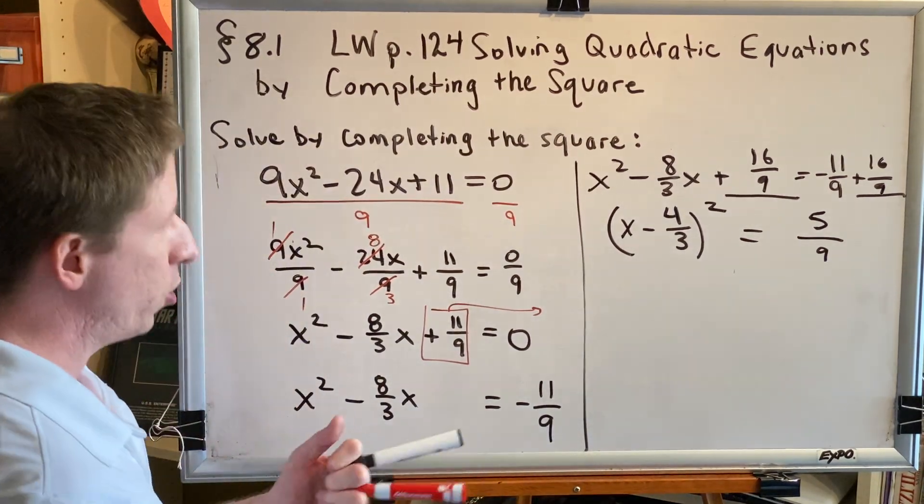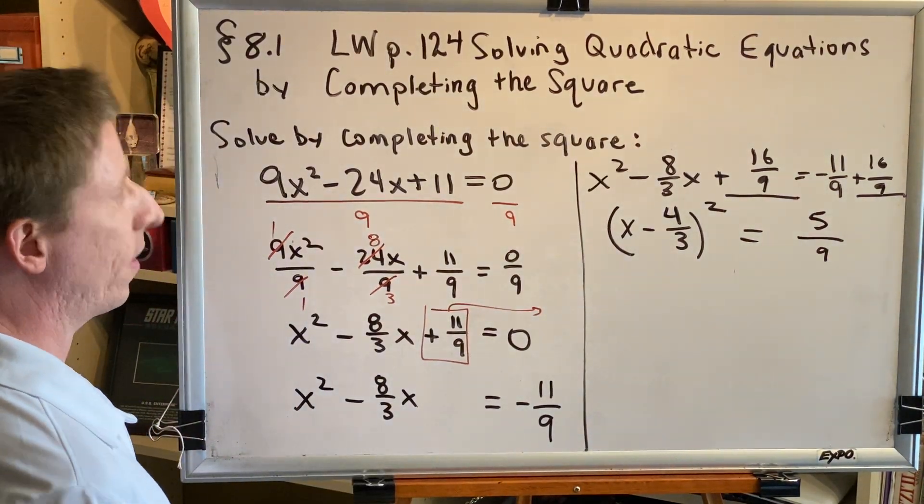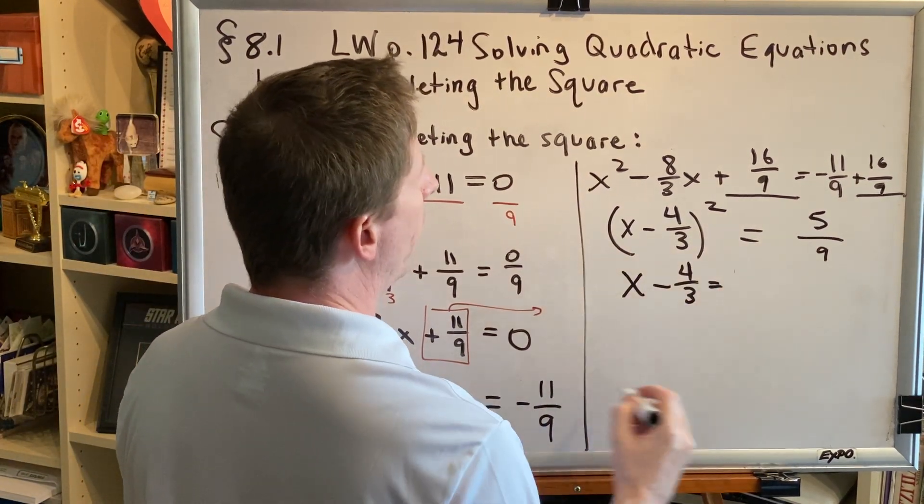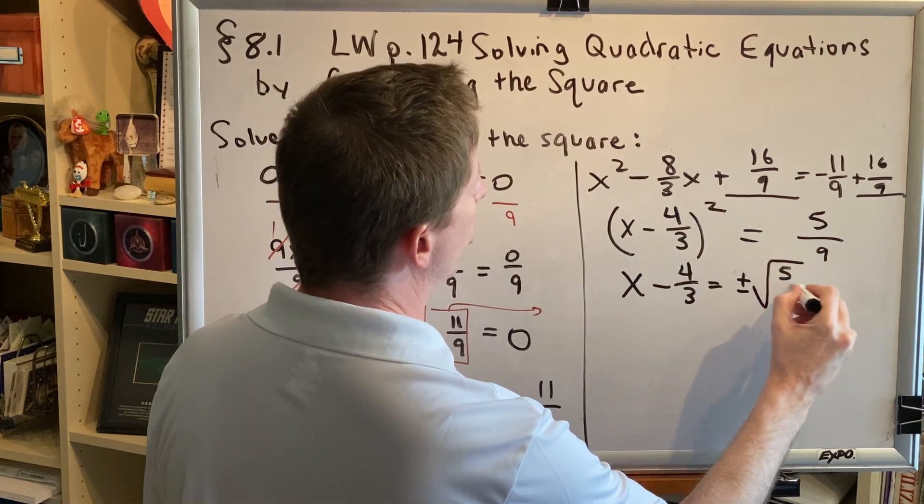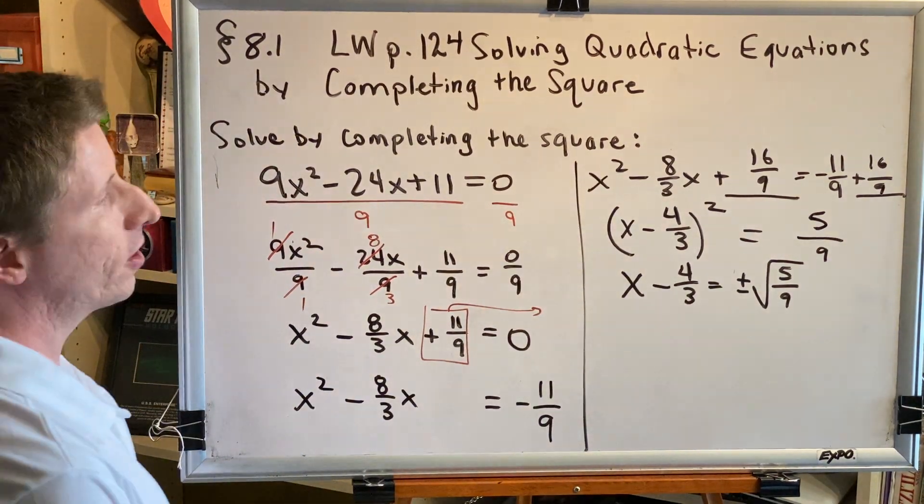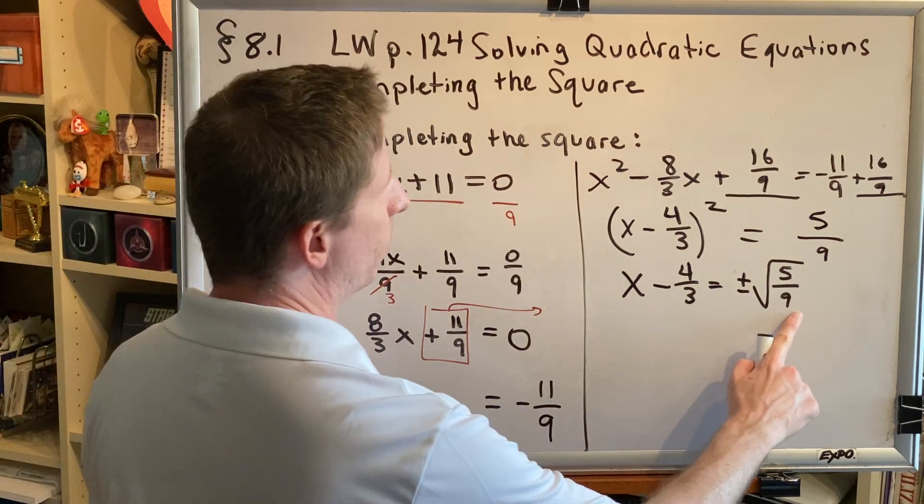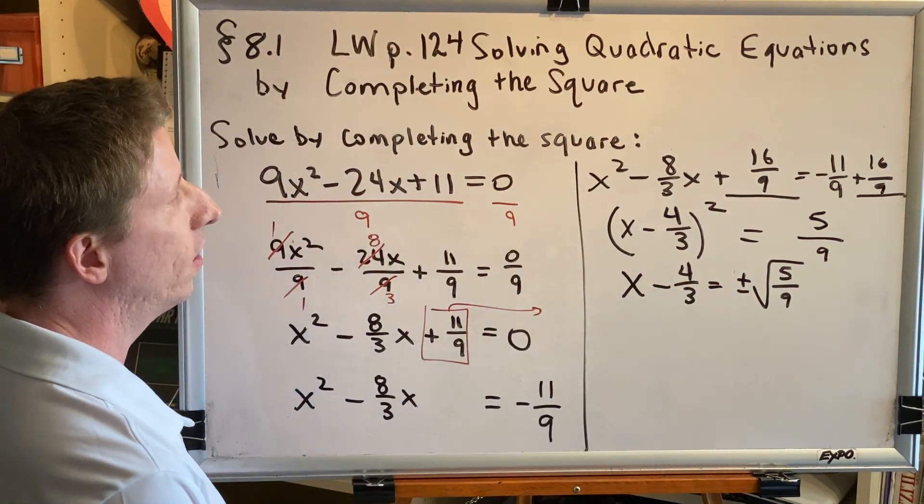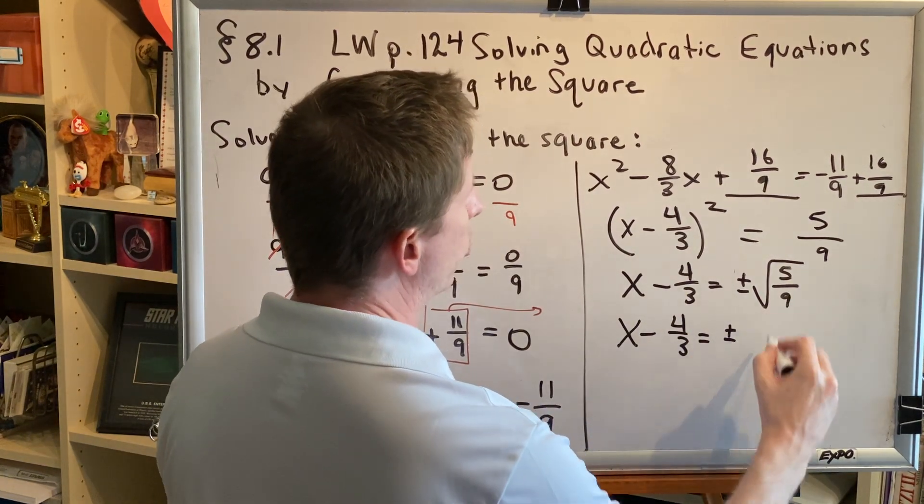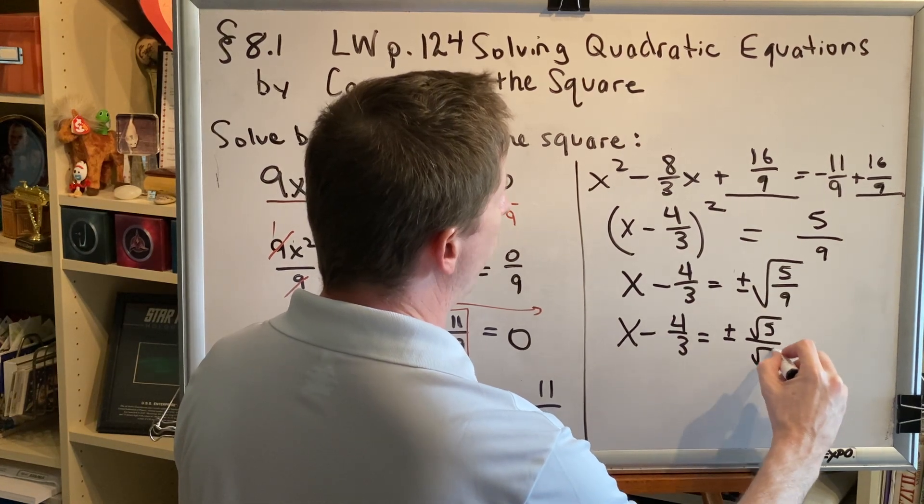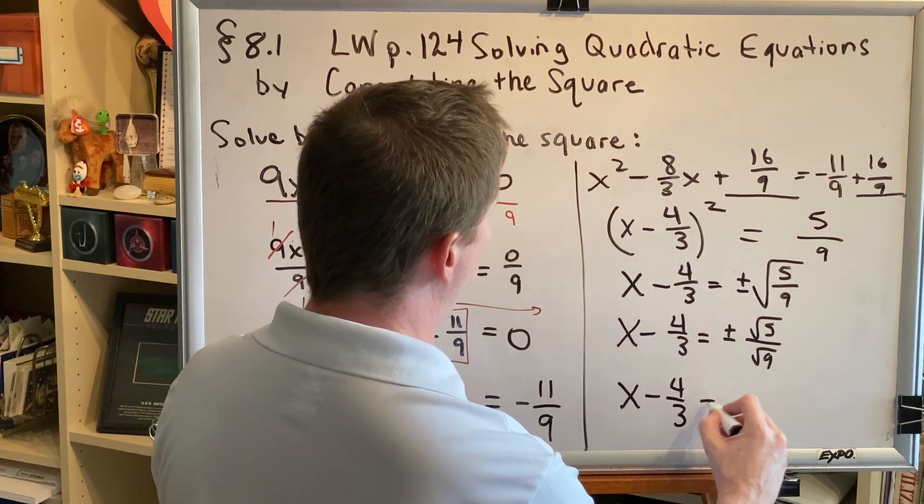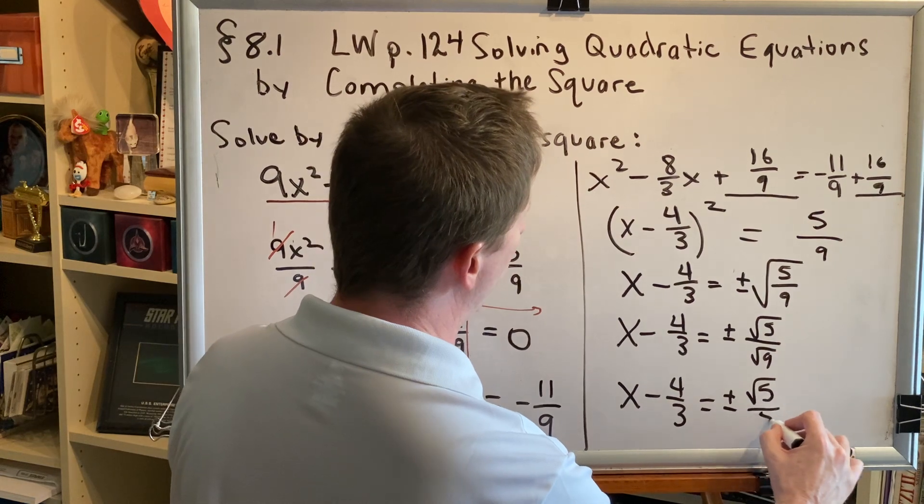Alright, step 5. Use the square root property to solve for x. So, drop the square and the parentheses. We get x minus 4 thirds equals, on the other side, put plus or minus square root. So we get plus or minus square root of whatever was on the right-hand side, which in this case is 5 ninths. Now solve for x. This usually has two parts: simplify the radical and move this term to the other side. Let's simplify the radical first. By the quotient rule for radicals, the square root of 5 ninths is the same thing as the square root of 5 over the square root of 9. And we know that the square root of 9 is 3. So we get x minus 4 thirds equals plus or minus the square root of 5 over 3.